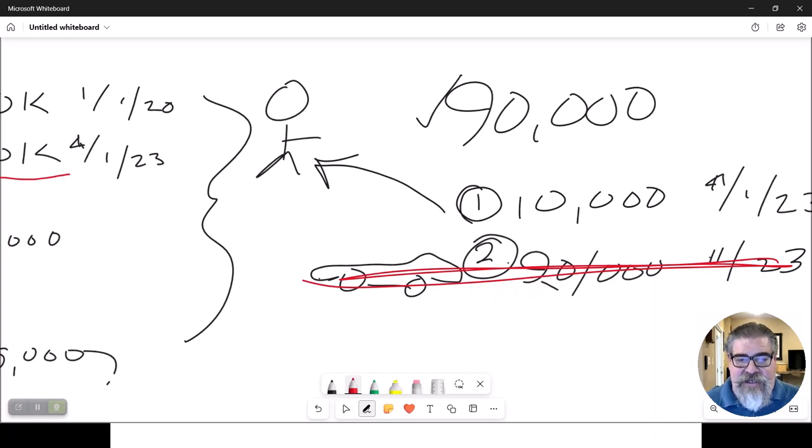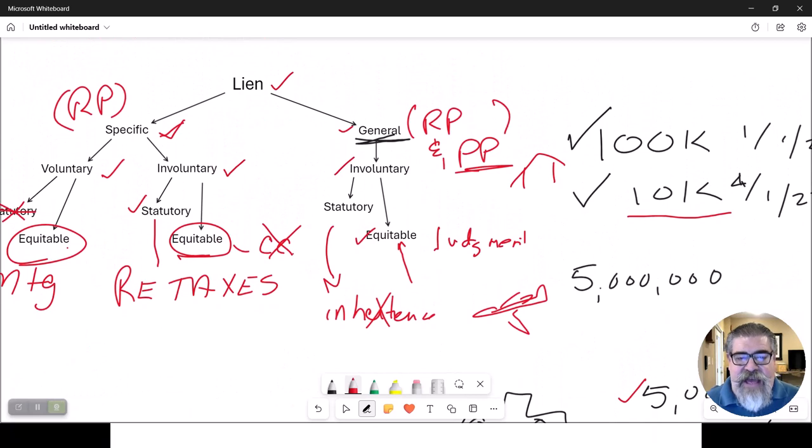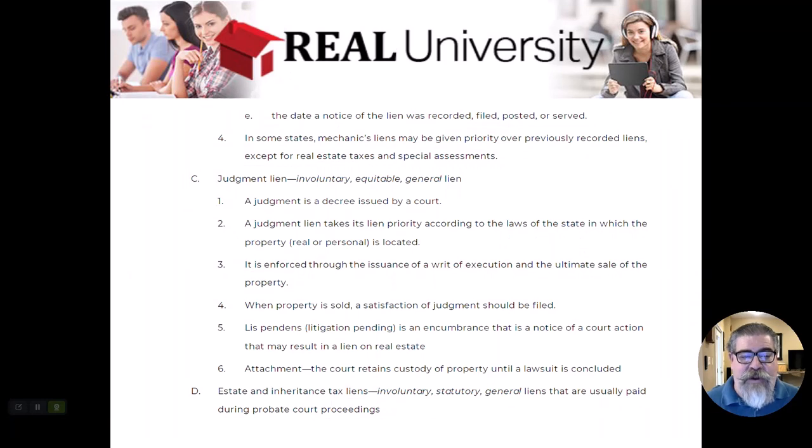So that is a general lien that is always involuntary, equitable, that is called a judgment, which is issued by a judge in a court of law. That would be the involuntary, equitable, general lien. It would be used to make sure that that person satisfies that court requirement to pay me that $10,000 that I deserve based on the judge saying, yes, I did. I won the court case. There is that inheritance tax, which is also involuntary, but it is a law that says corporations must pay taxes. So there could be an inheritance on that.